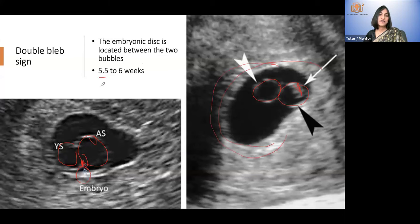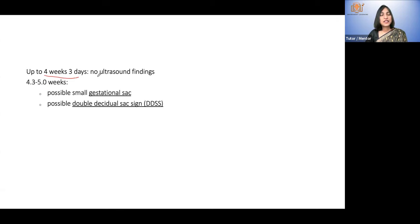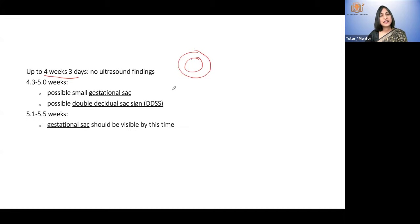This shows 5.5, meaning five weeks five days to six weeks. Up to four weeks three days — just three days after the missed period — you will not see anything on ultrasound. After four weeks plus three days, you may see a very small gestational sac and a double decidual sac sign — one sac with a white ring around it, giving the double decidual sac sign.